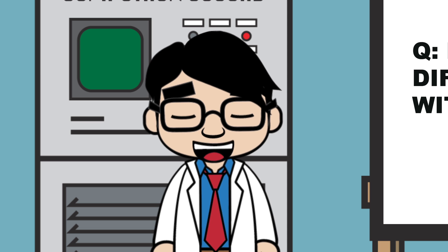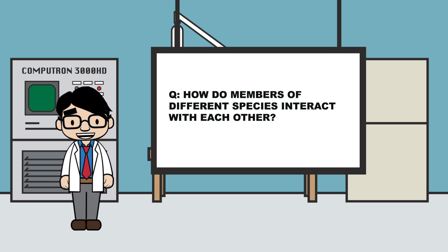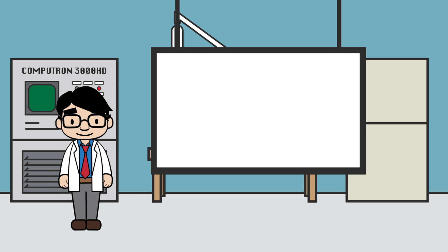Now you should be able to answer the question: how do members of different species interact with each other? That's it for now. Till next time, bye!